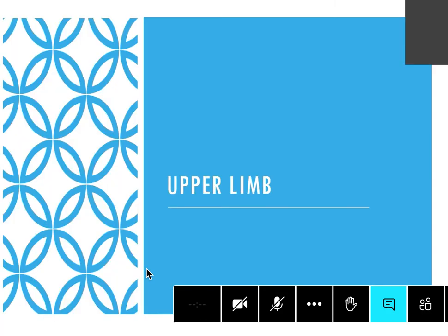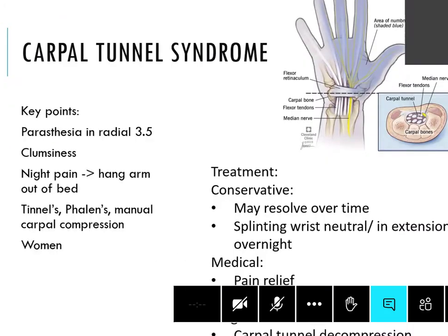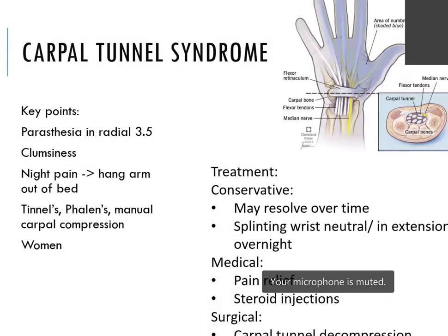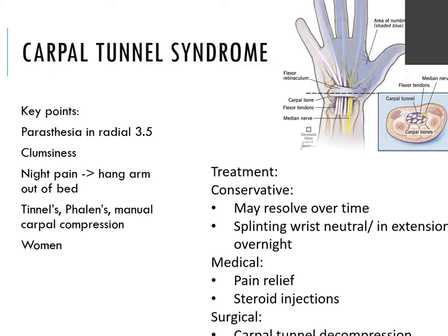Moving on to the upper limb, carpal tunnel syndrome is a favourite because it has such a nice classical presentation. Remember what the Tinel's and Phalen's manoeuvres are, because they may describe the test rather than just say Tinel's was positive. Also remember the three different kinds of treatment that you move through stepwise — start conservative, then medical if that doesn't work, then surgical. It may also be worth knowing the nine tendons that go through the carpal tunnel compartment, as that's another easy orthopaedic question.